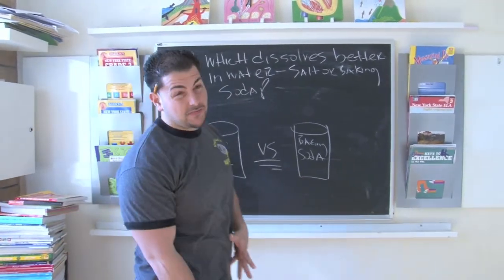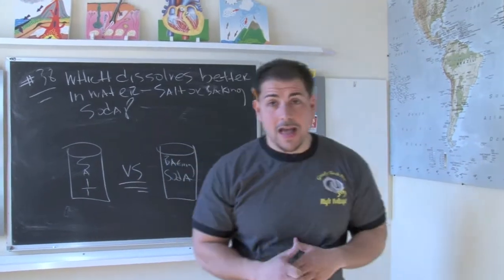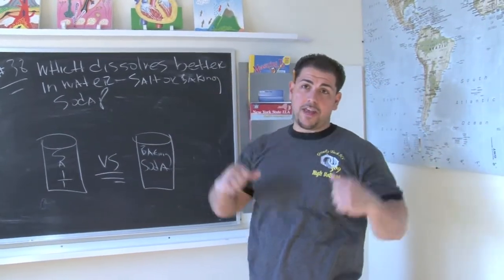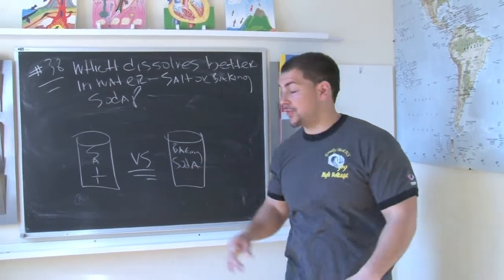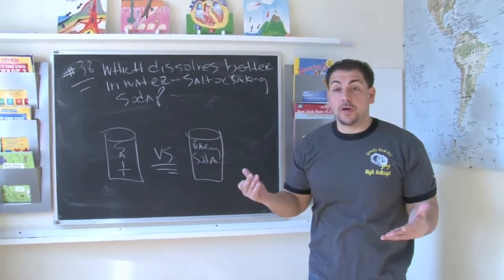Now baking soda is the stuff that's in the back of your refrigerator in that yellow box. It has that guy from Arm & Hammer on there. What it does is it deodorizes the refrigerator from foul odors. And then salt, we know what salt is.